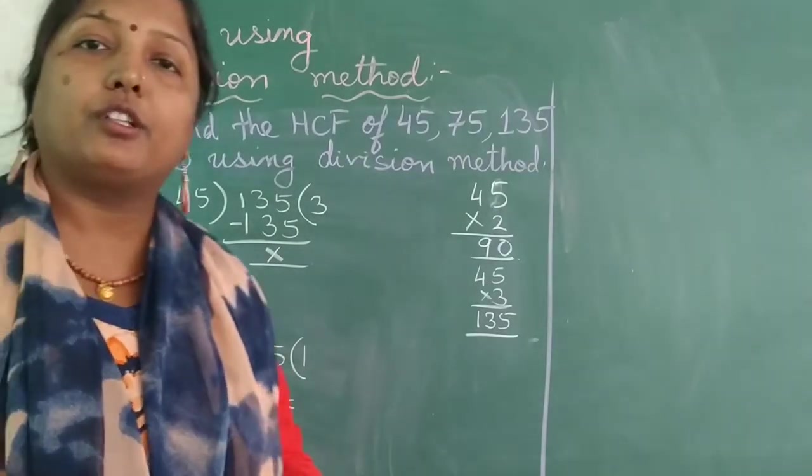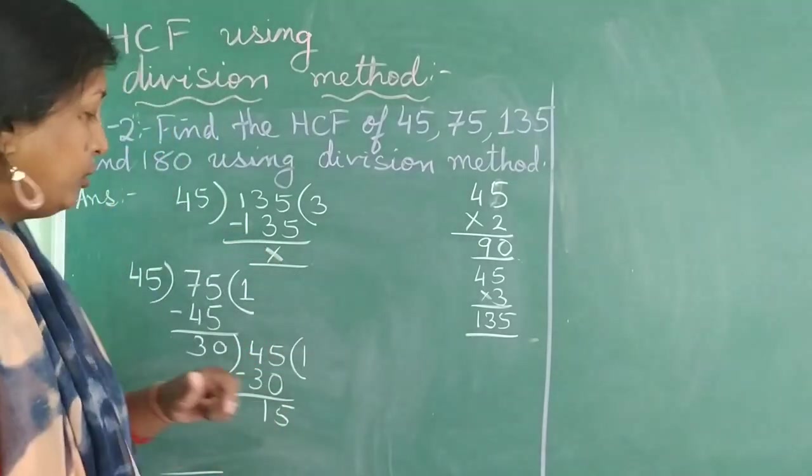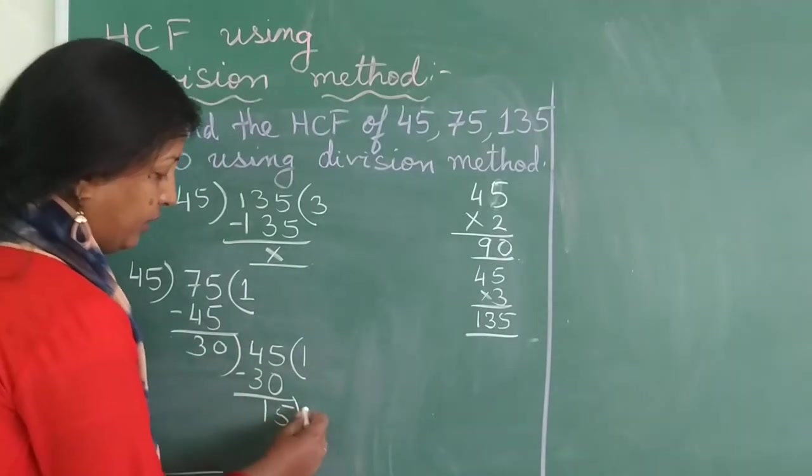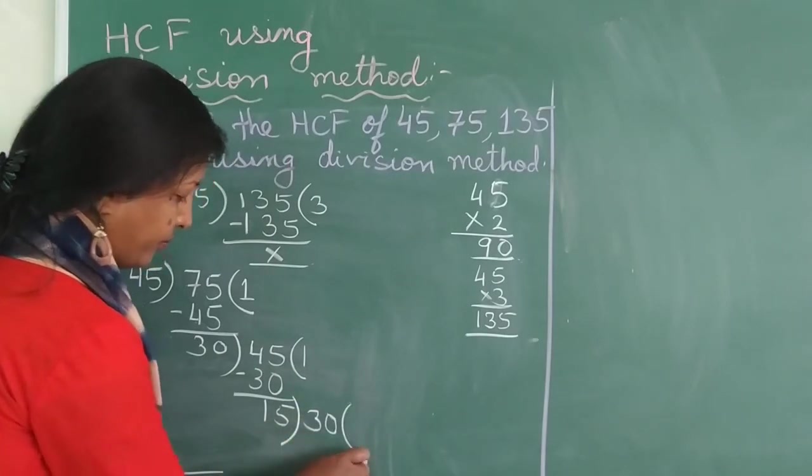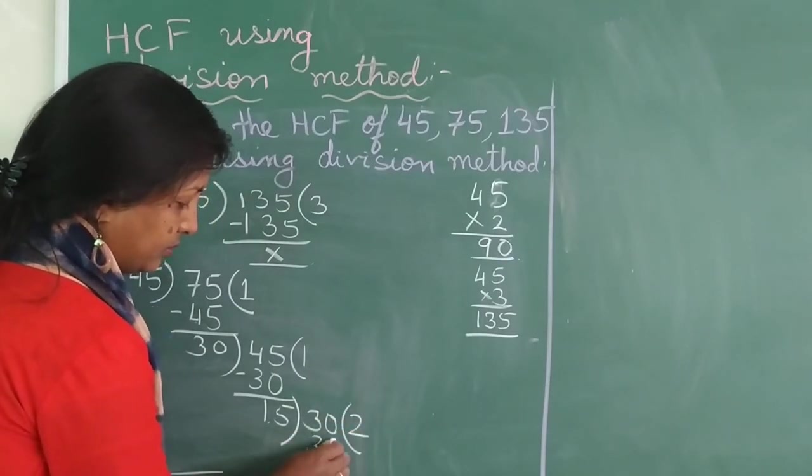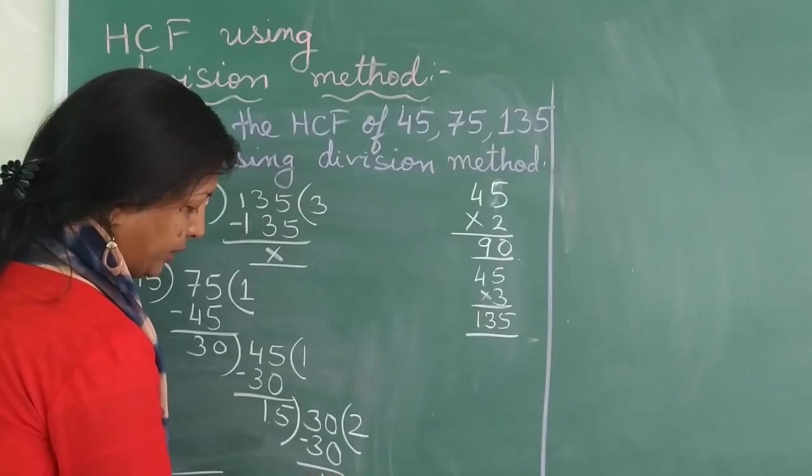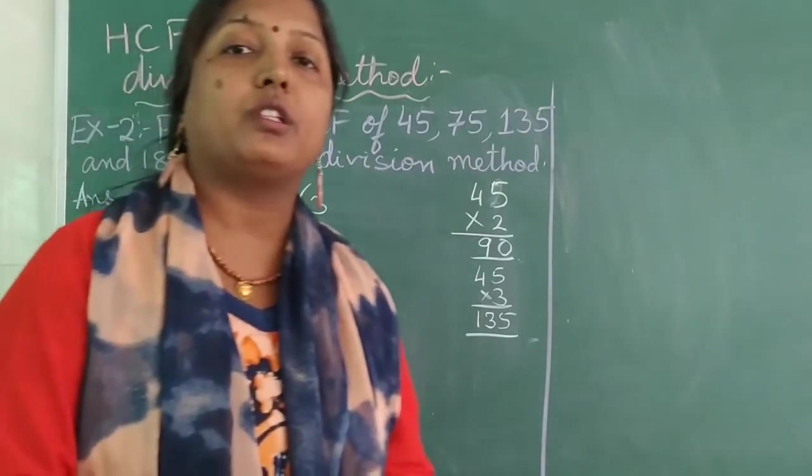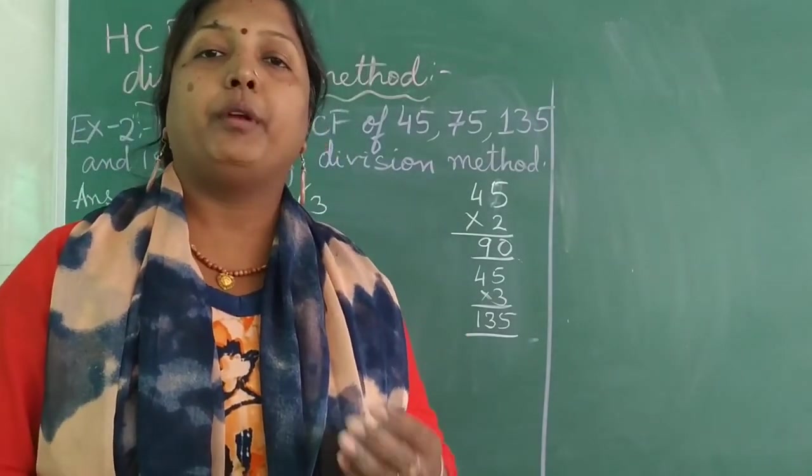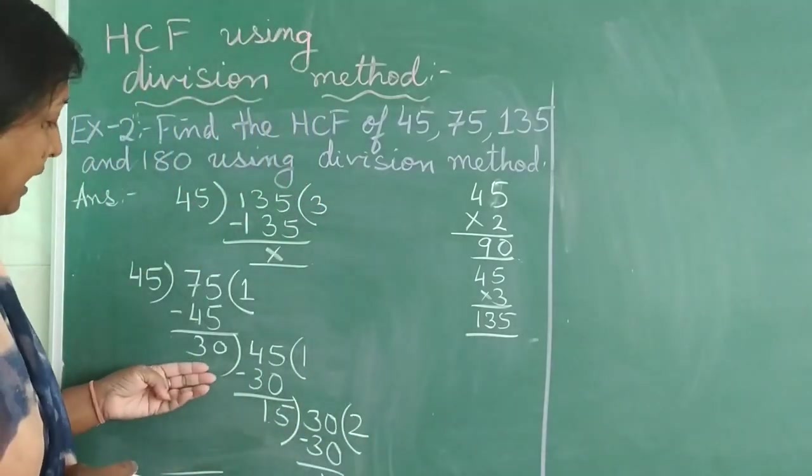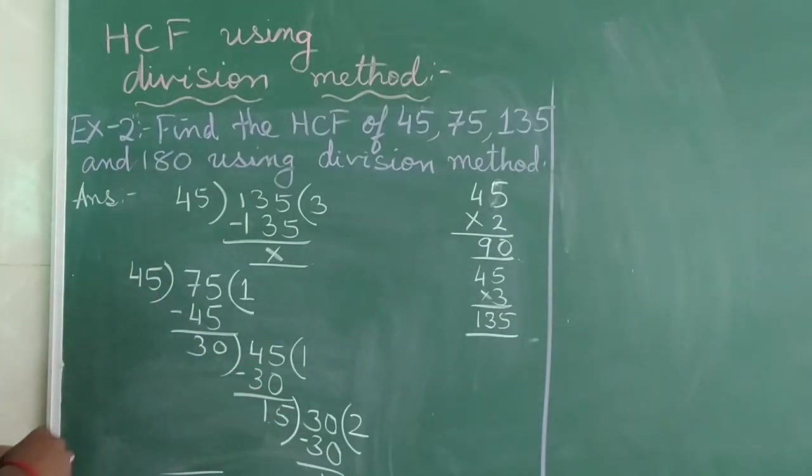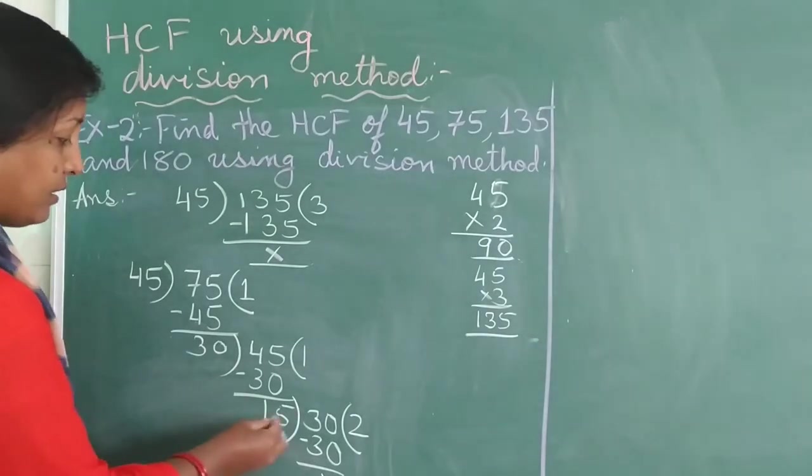So the remainder now is our divisor and the divisor becomes the dividend as we had known in the first result. 30 now divided by 45. 30 twos are gives you 60. So we go for 30, 1s are 30. We got 15. Now again we did not get a remainder 0. So we cannot say our division is over. We again go for the next. Now the remainder is our divisor and this divisor is our dividend. 15 twos are is 30. So we get the remainder 0.